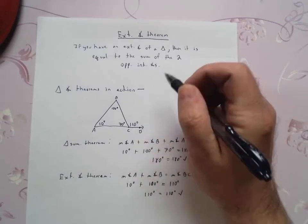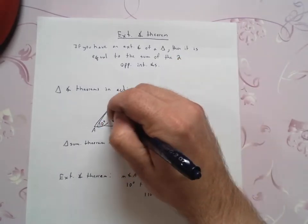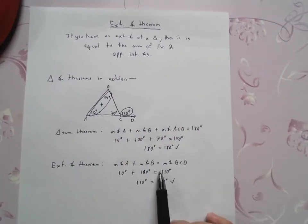This exterior angle, what it's saying up here is that this exterior angle is equal to the sum of these two added together. You can easily check that and verify that. That's what I've got right here.